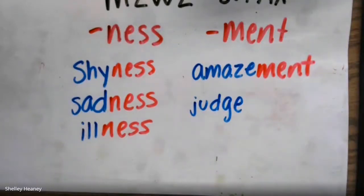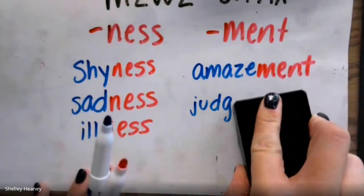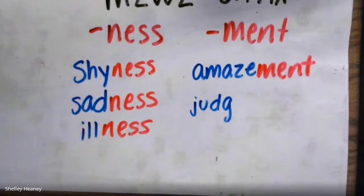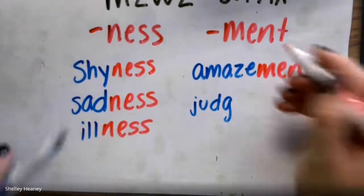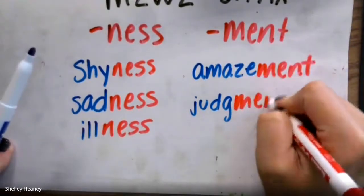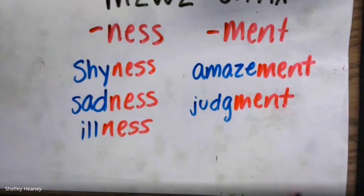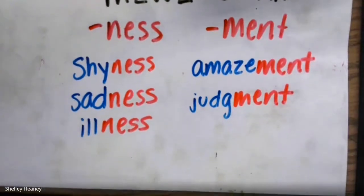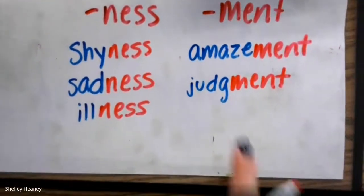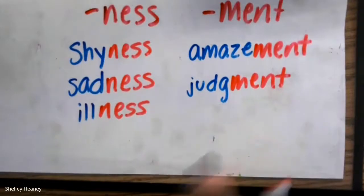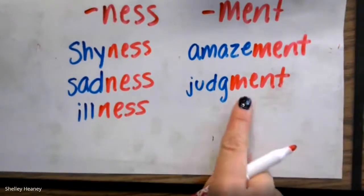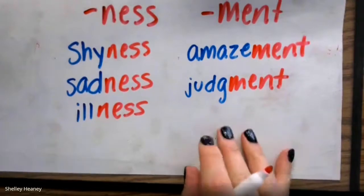If I have the word 'judge' — we talked about judge, this was one of our vocabulary words. To judge means that you're looking at the qualities of something and making an educated conclusion about something. This is one of the irregulars — I'm going to drop that E and add the suffix M-E-N-T. A 'judgment' is when you are making a conclusion about someone.